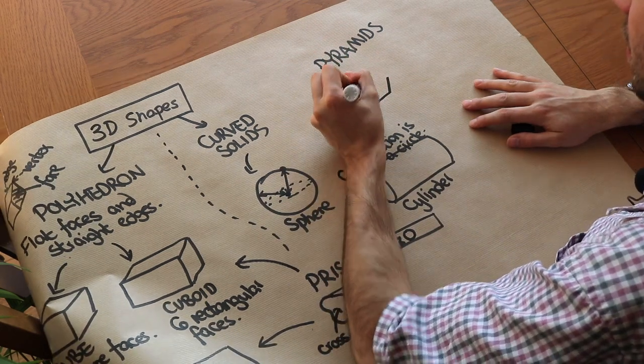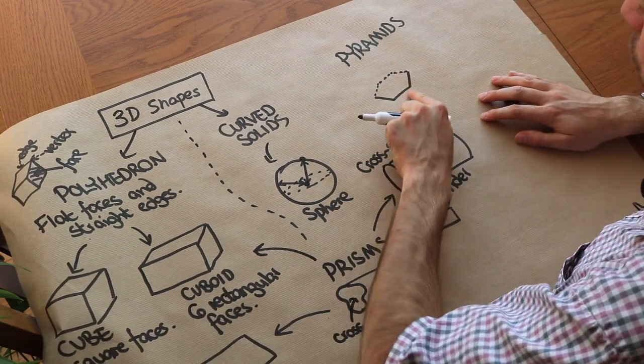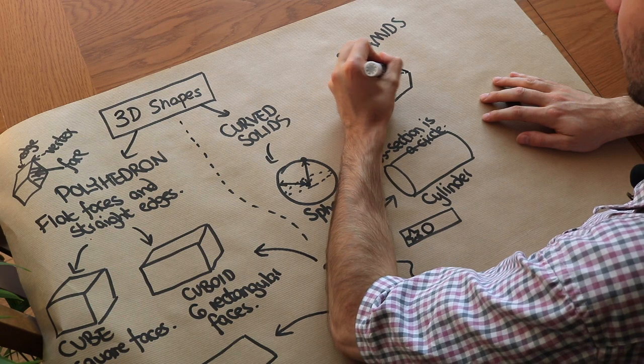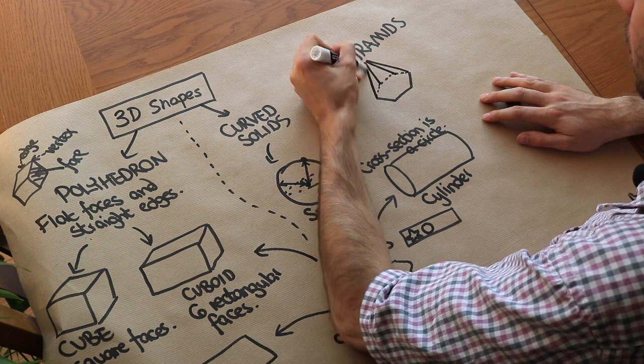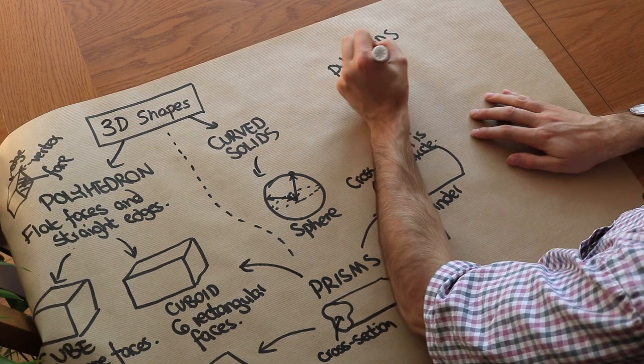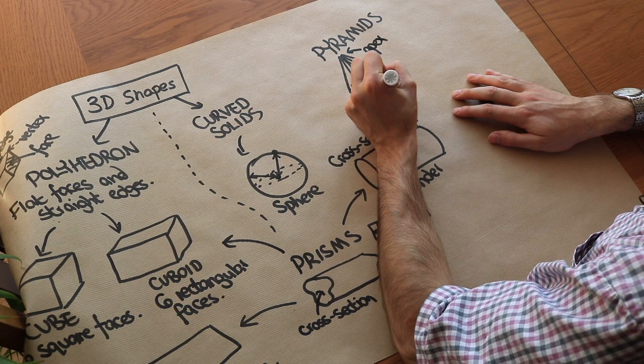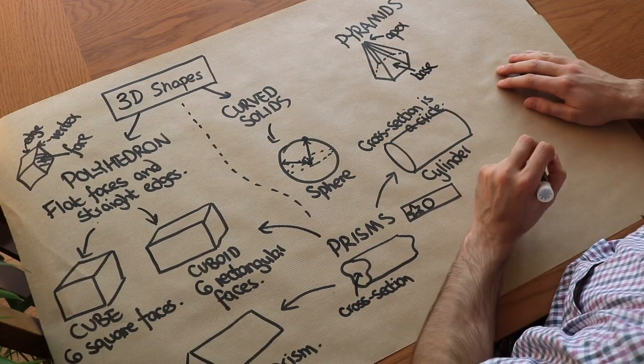Let's just say that the base is a hexagon. And then all of the vertices, all the corners of the shape join up at some single point at the top. This is known as the apex, the top of the pyramid. And this at the bottom here is known as the base of the pyramid.